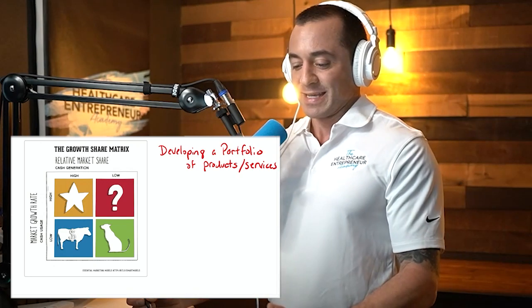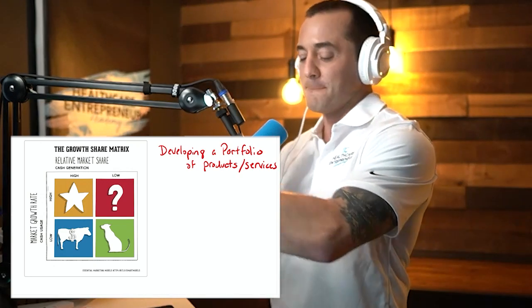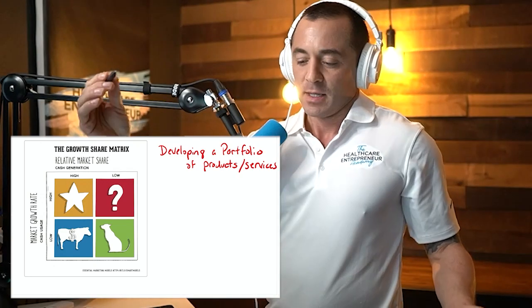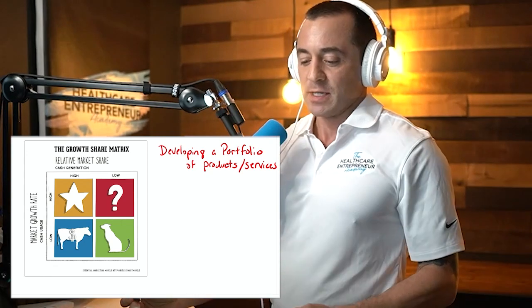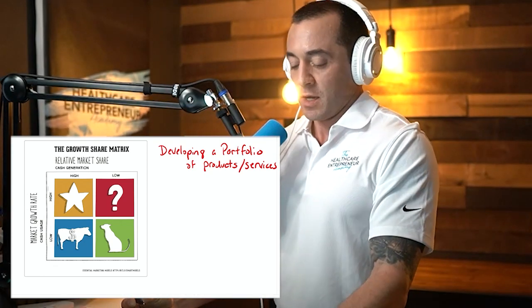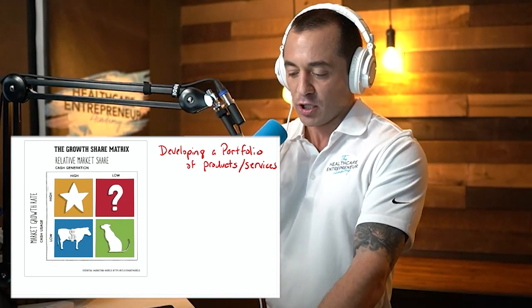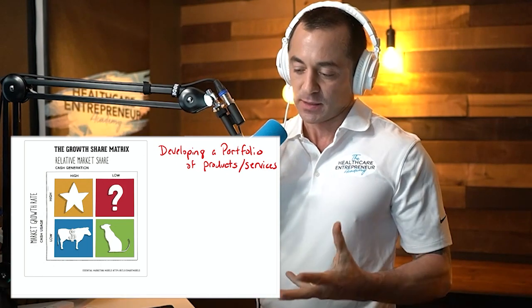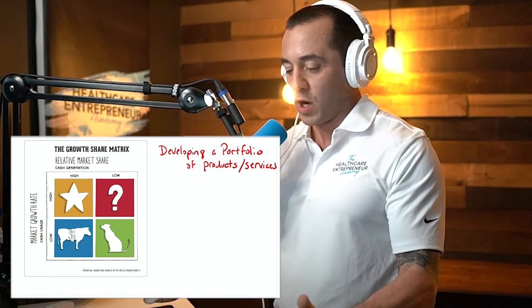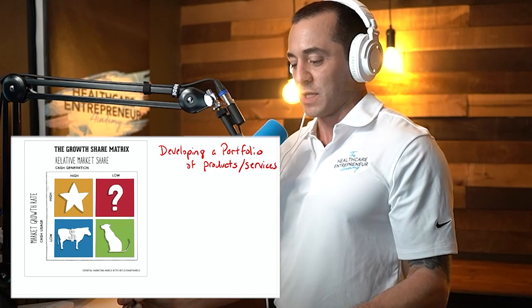This is something that's totally applicable to small business owners and clinic owners. Really, it doesn't matter what you're doing — if you have a business, this is definitely applicable to you. I'm going to share my screen here and show you the BCG Matrix, also called the Growth Share Matrix, which is probably the most common name for it. We're going to do a quick walkthrough on the matrix and what it means.